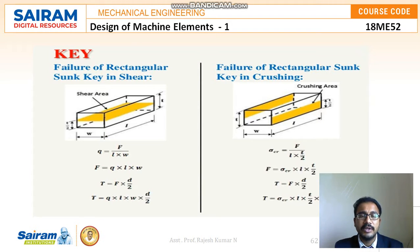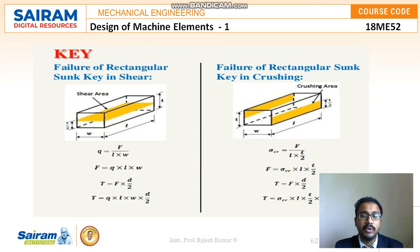Writing this in terms of F, the equation becomes F = τ × l × w. The torque equation for the rectangular sunk key is T = F × (d/2), so substituting F we get T = τ × l × w × (d/2). This is the torque for the shear case.